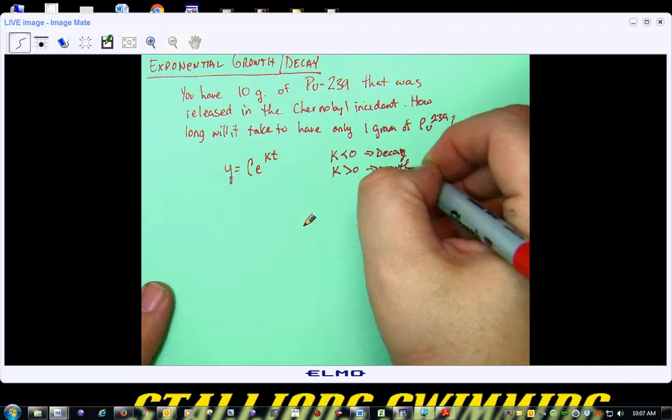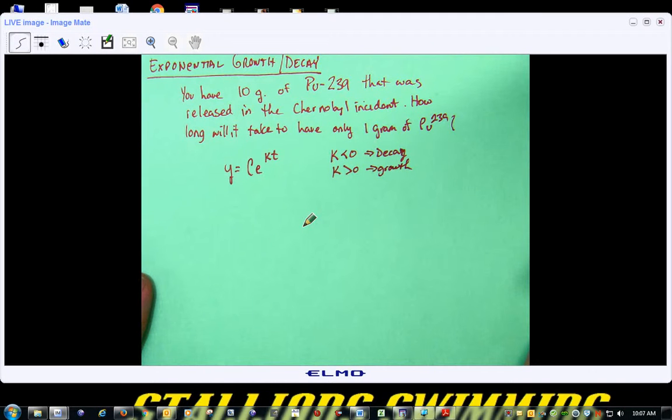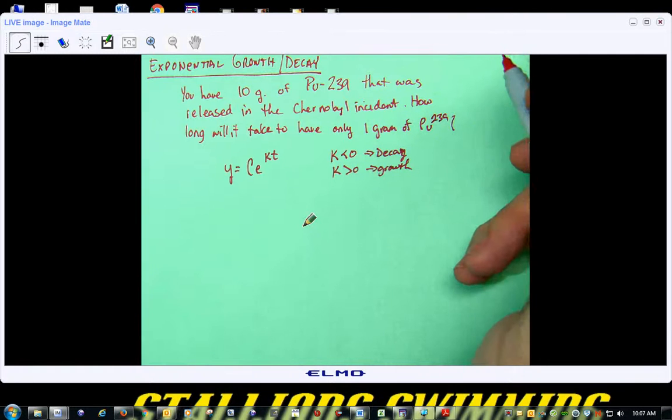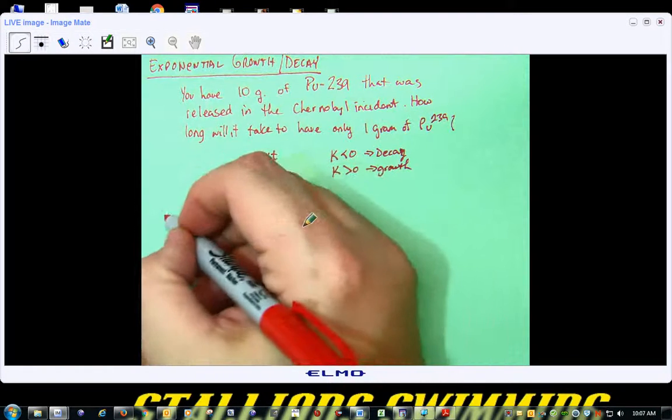So, what do you think K is going to end up being in this case? It's going to be negative, because it's going to be a decay problem. Now, there are certain ways, and I gave this to you on the worksheet, that you want to go about doing this. One, you want to calculate C.